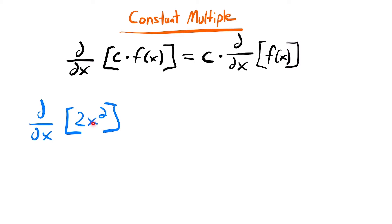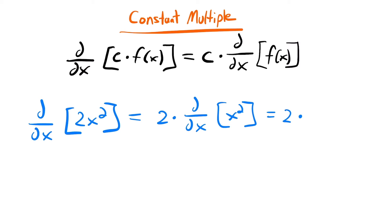So what we do by this rule is rewrite this as 2 times the derivative of x squared. Then using our power rule, we have 2 times 2 times x, and then subtracting 1 from the exponent gives 2 minus 1 equals 1. So we can simplify this to 4x, and that would be our derivative for this function.